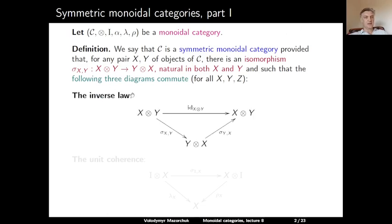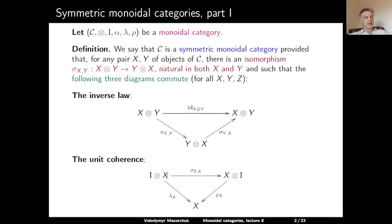The first diagram is the inverse law. If we start from X tensor Y and go by sigma to Y tensor X, and then again by sigma to X tensor Y, the composition should be the identity on X tensor Y. Then we have the unit coherence: if we start from Y tensor X and go to X by the left unitor, it should be the same as first applying sigma and going to X tensor I, and then applying the right unitor.